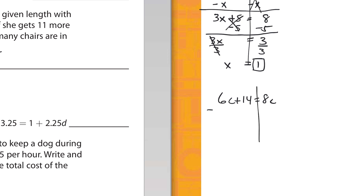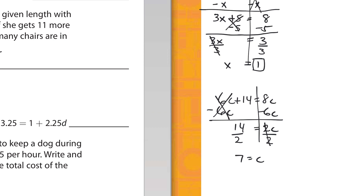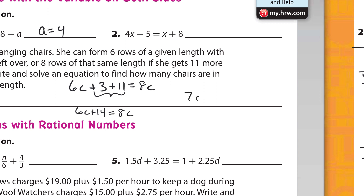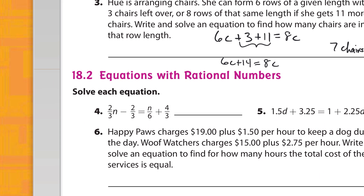We have 6c plus 14 equals 8c. Subtract 6c from both sides — these cancel — giving us 14 equals 2c. The inverse of multiplication is division, so divide by 2 on both sides. We get 7 equals c, so there are 7 chairs in each row.